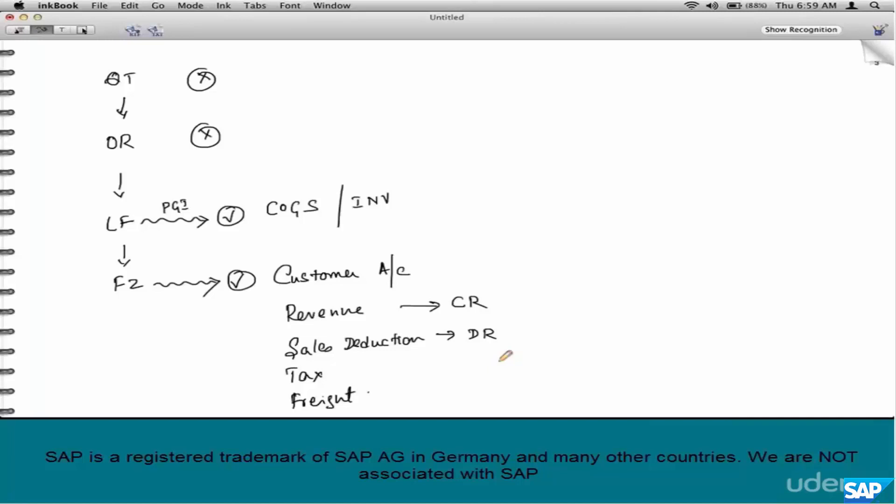By the way, why is it based on the document type? Because if we do the same transaction for a credit memo, the same revenue account is debited. You understand why? Because in case of a credit memo we need to give money back to the customer, so automatically the entries will be reversed. Again, SAP will automatically take care of that for you. You don't have to worry about that. Overall though, just remember the basic accounts at a very high level.